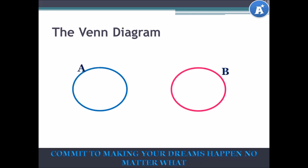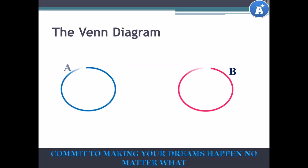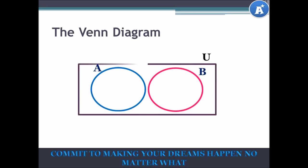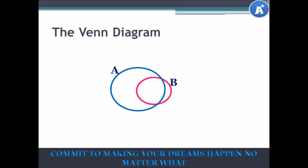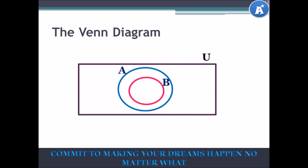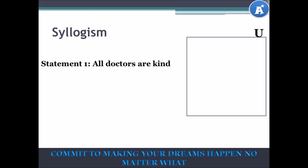The Venn Diagram is a way of representing sets using a diagram or image. When you're using the Venn Diagram, if you draw two sets connected, it means that they share elements in common. Another Venn Diagram between two sets can be disjointed, meaning the sets do not share anything in common — these are called disjointed sets. Also, we can have one set completely within another, meaning all the elements in one set belong in another — in this case, B is a subset of A.